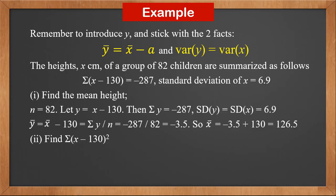Second, find sigma x minus 130 squared. We know var y is sigma y squared over n, minus y bar squared. Sigma y squared is sigma x minus 130 squared. N is 82. Y bar is minus 3.5.